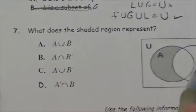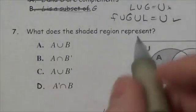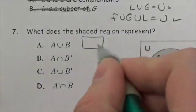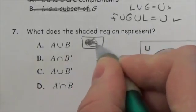This question asks us what does the shaded region represent here? Let's take a look at what these guys are talking about here. A union B, you would shade all of that.